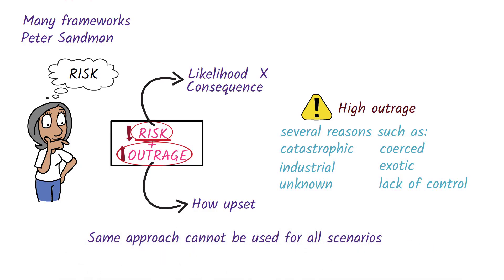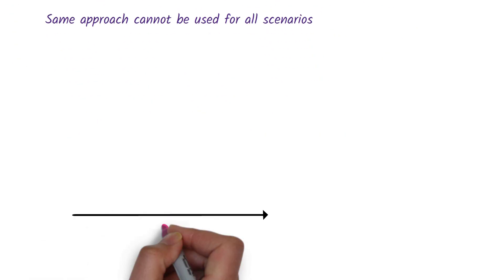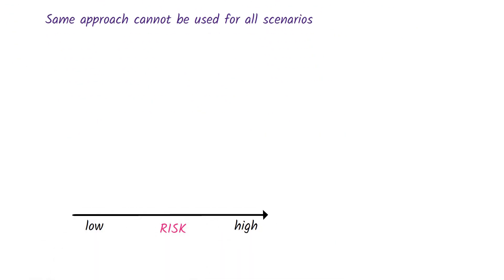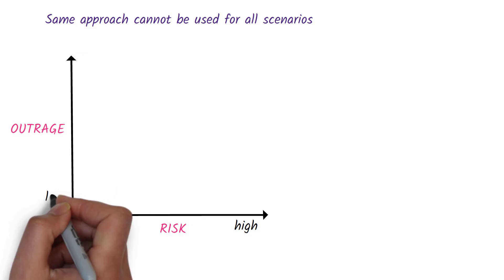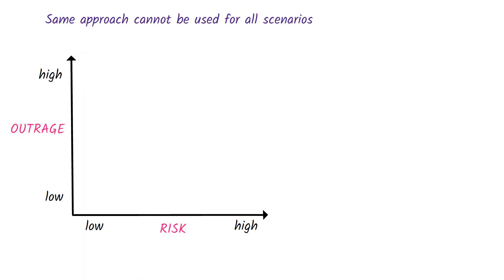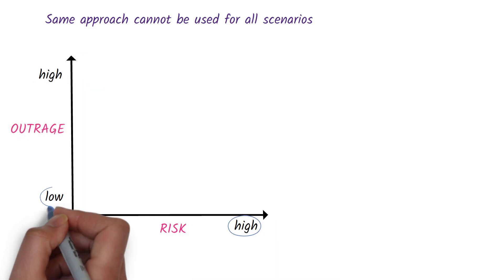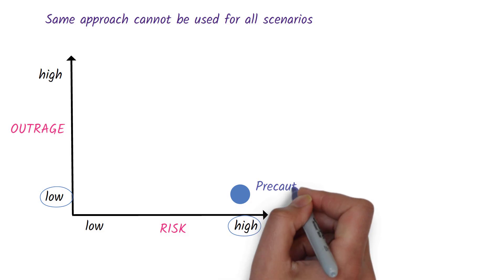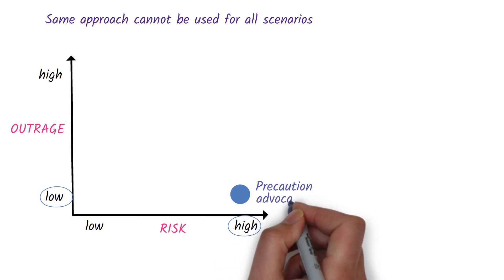Let's look at this visually. Imagine a graph of risk on one axis from low to high, and outrage on the other from low to high. When the risk is high but the outrage is low, the goal is to raise awareness and motivate people to take protective action. This is known as precaution advocacy.